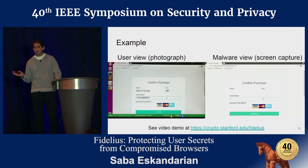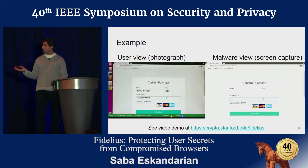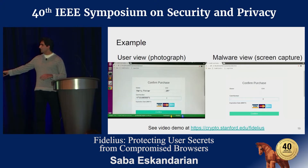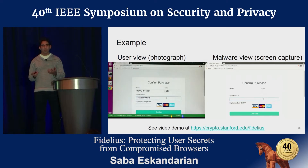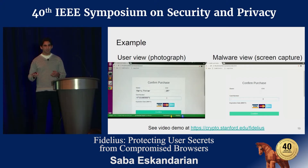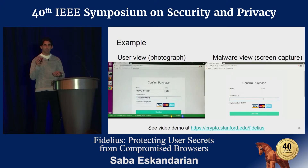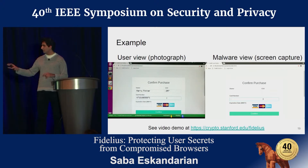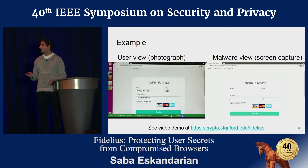Here's an example of Fidelius in action. On the left, a photograph of someone typing sensitive credit card information on screen. On the right, a screenshot taken from the same computer at the same time — simulating the view malware would have. In real life, the credit card number was visible on screen. But the malware only sees that someone navigated to the page and clicked the credit card field; the actual digits typed are not visible to the attacker. There's a video demo at crypto.stanford.edu.